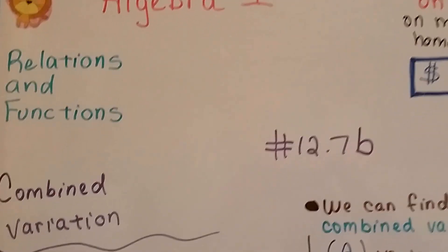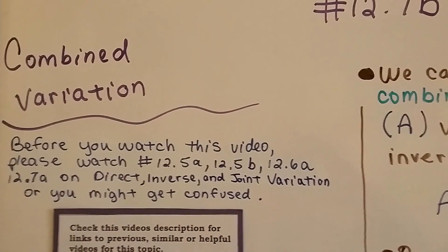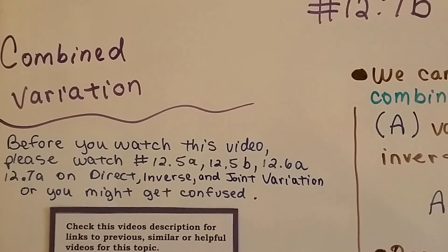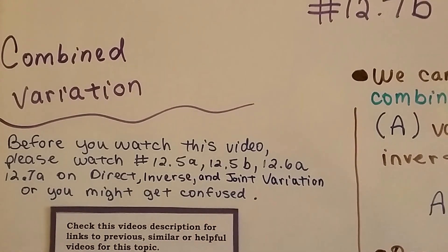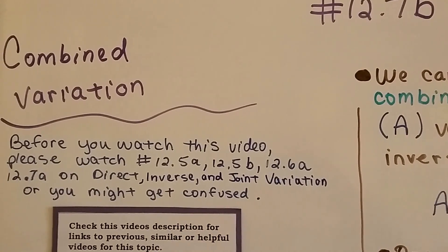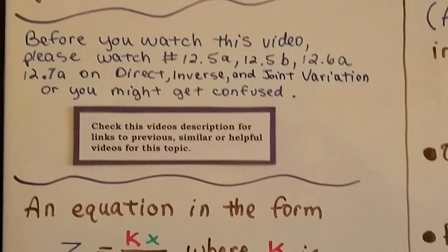Algebra 1, 12.7b, Combined Variation. Throughout these last few videos, you have to have watched the previous video so that you don't get confused. There's a link in this video's description to get to them. You need to understand direct, inverse, and joint variation before you can watch this one.